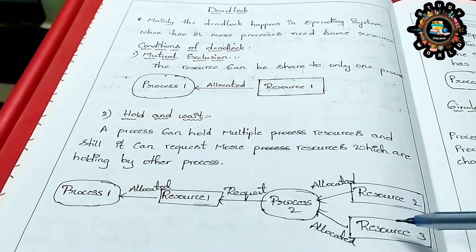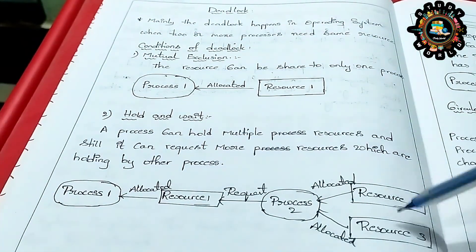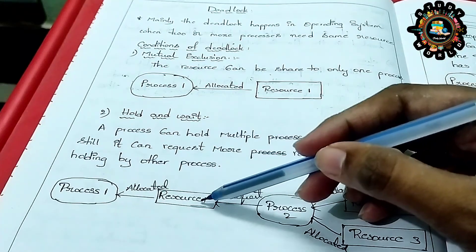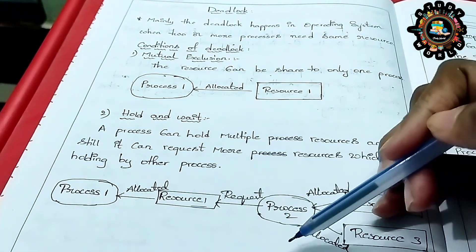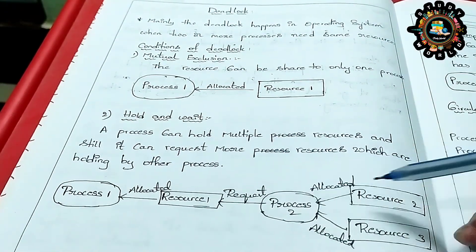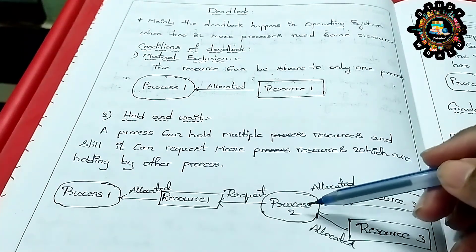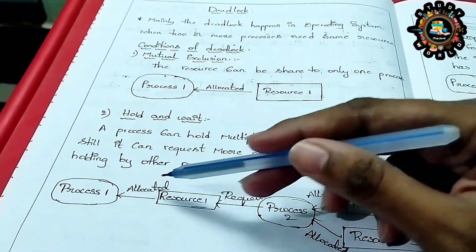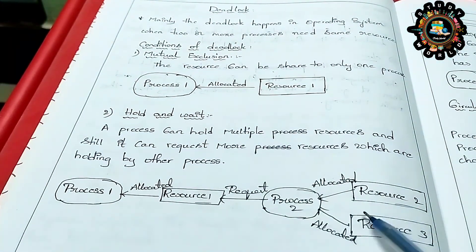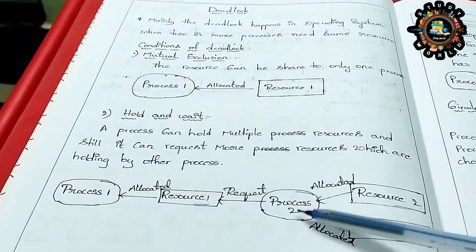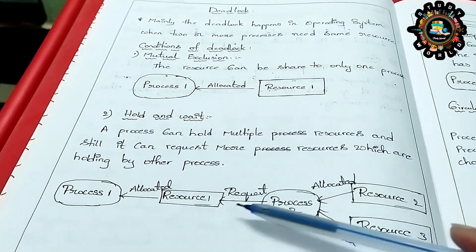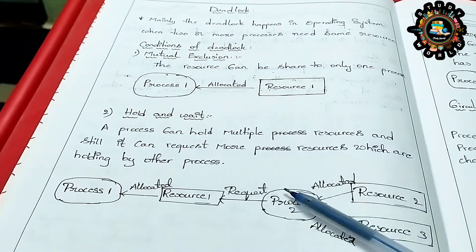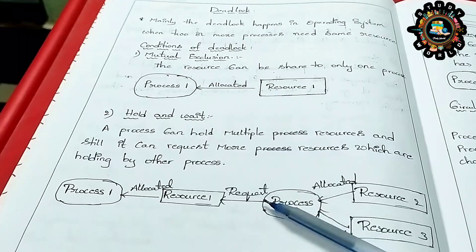How does this work? Resource 2 is allocated to one process. This resource can be used to satisfy a request. Resource 1 is allocated to P1. Process 2 is holding one resource and requesting resource 2. All these resources are held — that is Hold and Wait. P2 is holding a resource and waiting for another resource.